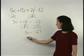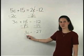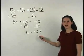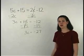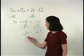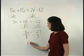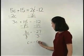So we now have our variables together on one side of the equation and our numbers together on the other side. And we can solve for c by dividing both sides of the equation by 3 to get c equals negative 9.